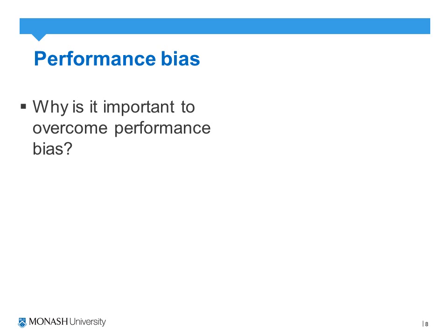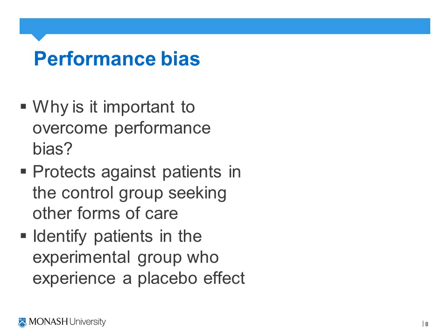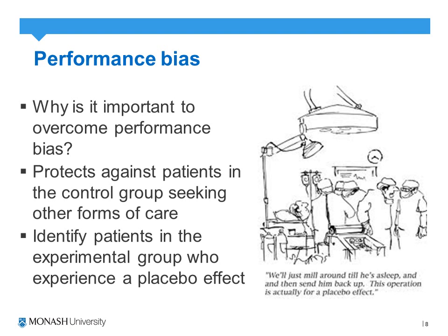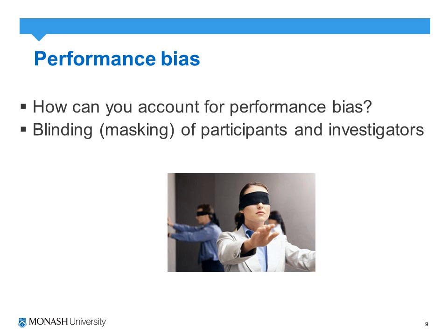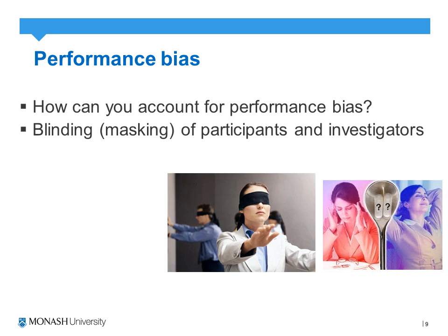Overcoming performance bias is important because it protects against patients in the control group seeking other forms of care, and it can identify patients in the experimental group who may experience a placebo effect. The most commonly known method is the double-blinded randomized control trial, where we blind both the participants and investigators if possible. In drug trials, for example, both the intervention pill and the control pill look and taste the same, making it very difficult to differentiate between the two.